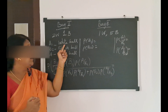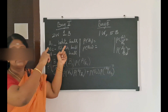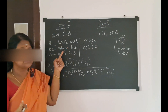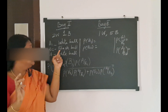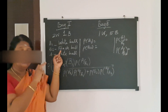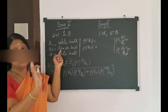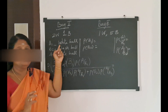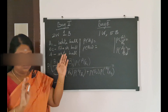B1 is the event that a white ball is drawn from Bag 1. B2 is the event that a black ball is drawn from Bag 1. So B1 corresponds to drawing a white ball and B2 corresponds to drawing a black ball.